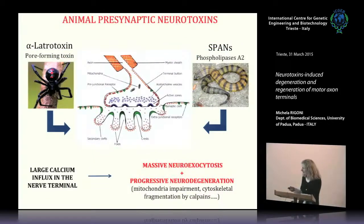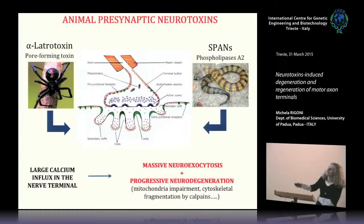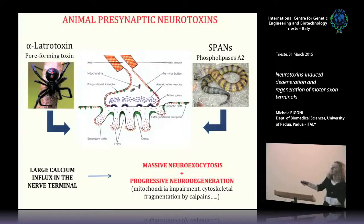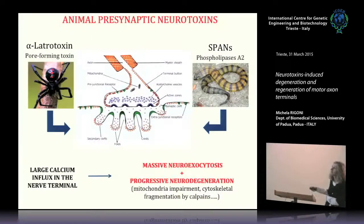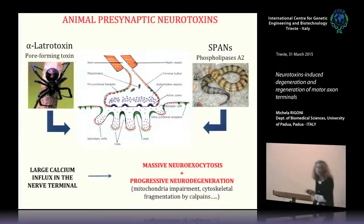We work mainly with two classes of animal neurotoxins: a spider toxin called alpha-latrotoxin, and a group of snake neurotoxins that we call SPANs. These toxins target the presynaptic element of the neuromuscular junction and leave the postsynaptic site unaffected. They cause paralysis by different biochemical mechanisms, followed by nerve terminal degeneration. The main changes at the presynaptic nerve terminal — calcium overload, mitochondrial impairment, and cytoskeletal degradation — resemble features observed in many neurodegenerative diseases.